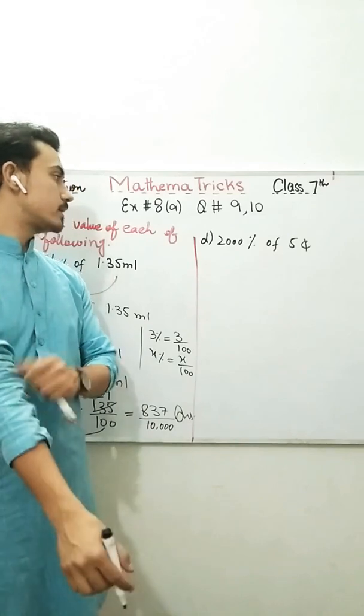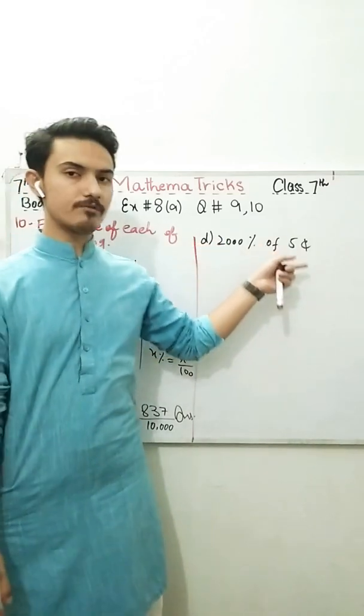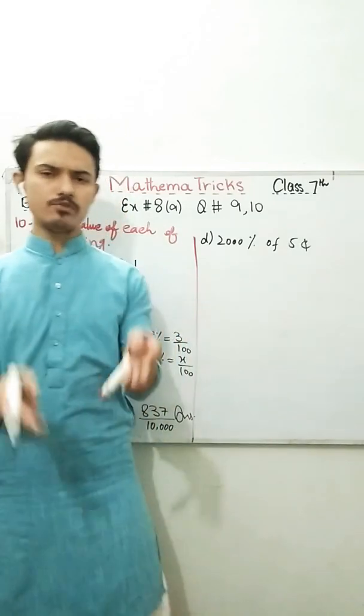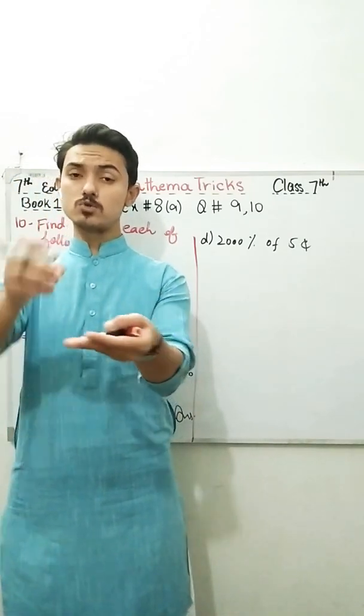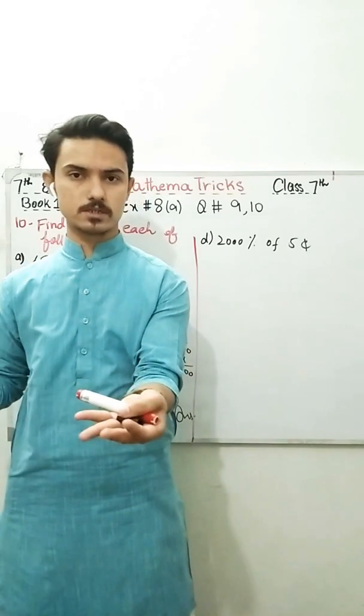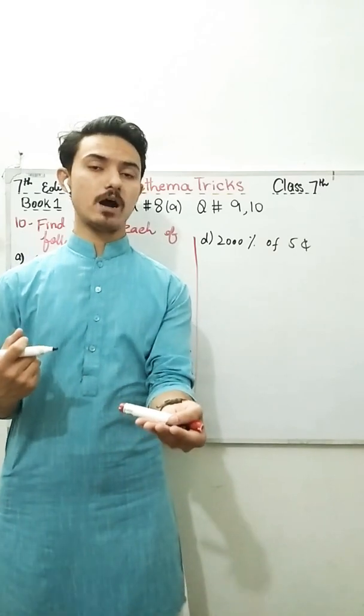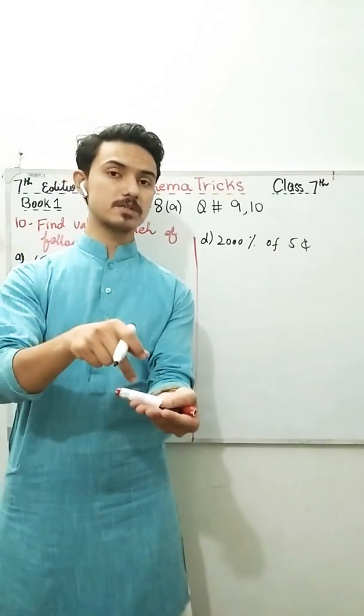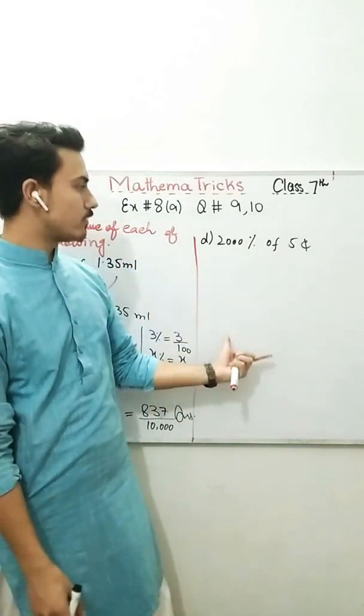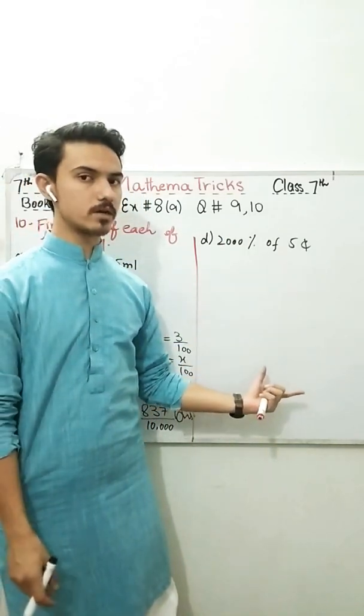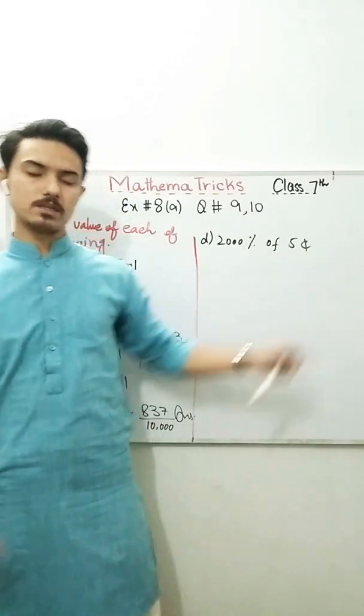Let's solve this one part. Part D, what it said, we need to find 2,000 percent of 5 cents. If you have given 5 cents and I said, I need to find the 2,000 percent of this 5 cent. Remember, 100 percent is equal to that value. What we need to find? I'm going to find the 2,000 percent of that value of 5 cents.